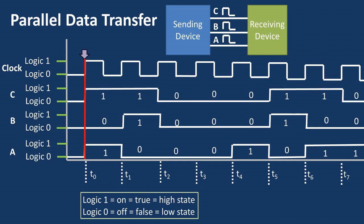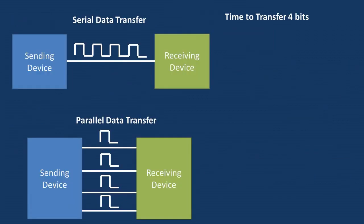So in this case, at T0, line C has a one, line B has a zero, and line A has a one. At T1, line C has a one, line B has a one, and line A has a zero, and so on and so forth.